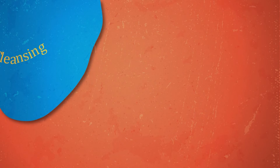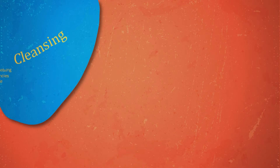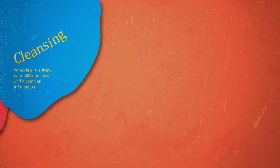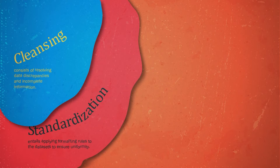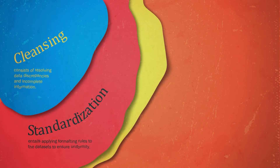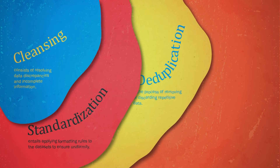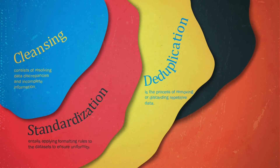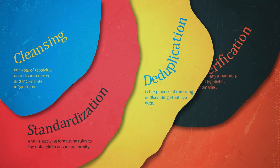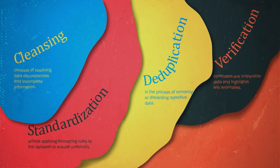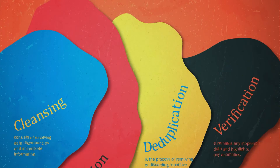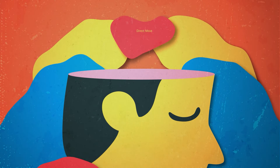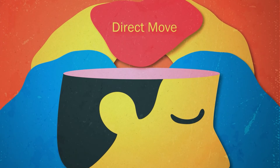Various sub-processes take place in the data transformation stage. For example, cleansing consists of resolving data discrepancies and incomplete information. Standardization entails applying formatting rules to the datasets to ensure uniformity. Deduplication is the process of removing or discarding repetitive data. Verification eliminates any inoperable data and highlights any anomalies. Sorting groups data into defined categories. When there is data that does not require any transformation, it is known as direct move or pass-through data.